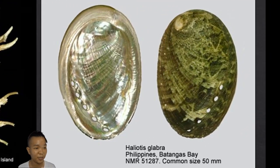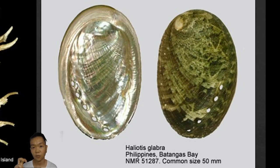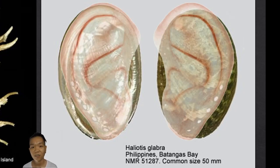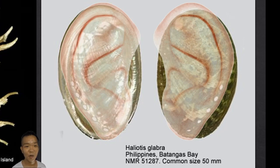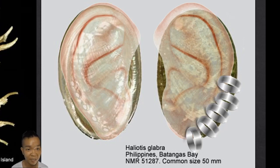The abalone — what other interesting thing can we say apart from the fact that you can eat it? The name: 'hali' means salty, 'otis' means ear. If you look at the shell, it looks like an ear, and it's in a marine environment — so it's like the ears of the sea. It has a lot of holes — a lot of piercings.